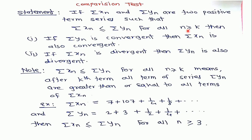Series yn dominates series xn means after the kth term, all terms of series yn are greater than all terms of series xn. For example, if series xn equals 7 + 1 + 1/4 + 1/8 + ... and series yn equals 2 + 3 + 1/2 + 1/4 + ..., after the third term all terms of yn are greater than all terms of xn. Therefore we write: yn dominates xn for all n greater than or equal to 3.